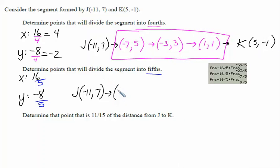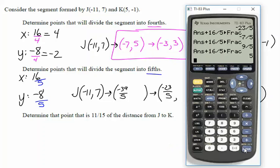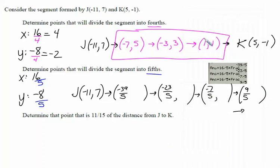Let's write some of these on the board. Writing out these points, we have negative 39 fifths, negative 23 fifths, negative 7 fifths, and 9 fifths for the x values. And then when we go back to the calculator, we get the x value of 5, which of course is our other endpoint. So we've got 5 comma. Now hopefully the y coordinate is going to be negative 1, and we'll be over at K.